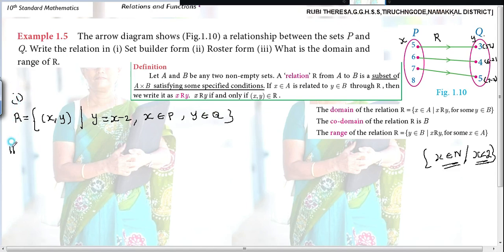Next, the second one, you have to write it in roster form. This is set builder form. Next one is roster form. Suppose you are unable to write in set builder form first, just try to attend the problem correctly.